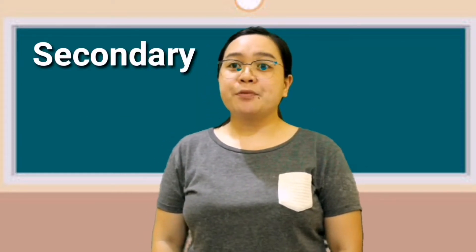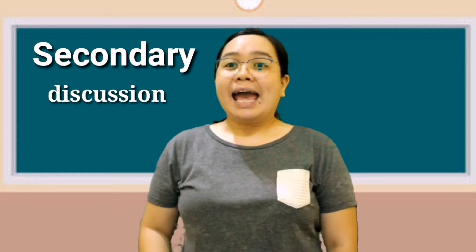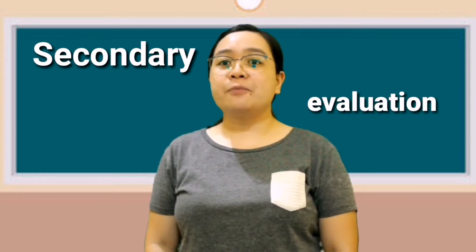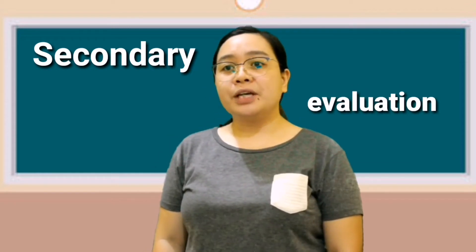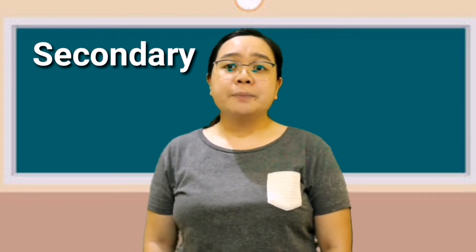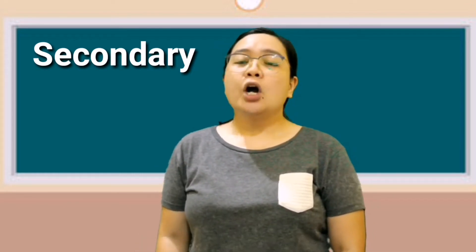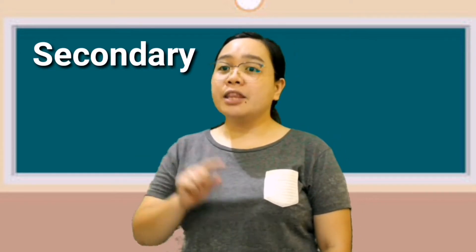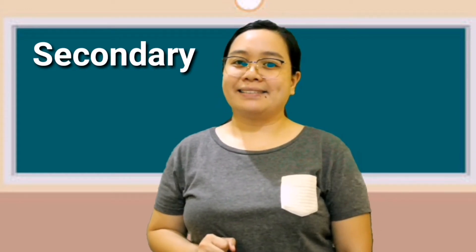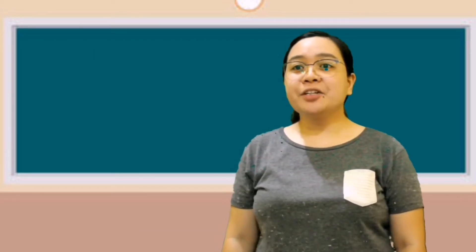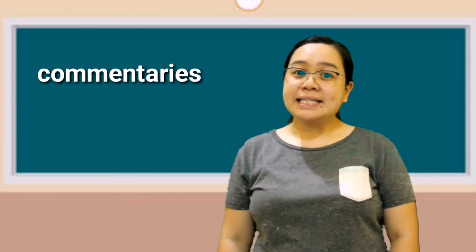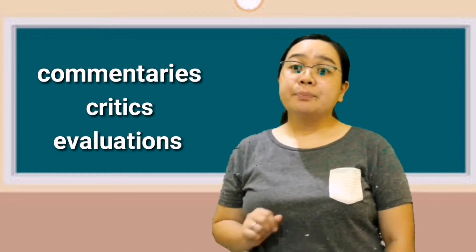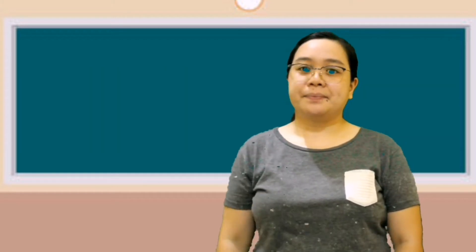Secondary sources provide information, discussion, and/or interpretation of the evidence. These are usually evaluations of primary sources. These are also information written by authors who do not personally witness the event or action. Note that the definition of secondary sources varies depending on the context and/or disciplines. Examples of secondary sources are commentaries, critics, and evaluations including journals and magazines not portraying information from eyewitnesses.